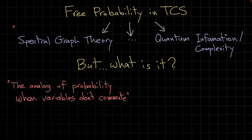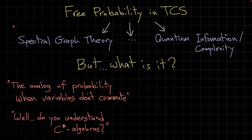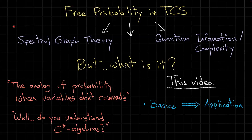A common answer you may find is that free probability is an analog of regular probability, just that the random variables do not commute. This phrase may sound interesting or not, but it is not very informative. If you dive a little deeper and ask a researcher, you will get an answer that is typically very technical and sometimes semi-apologetic. What is available online is very comprehensive, but not necessarily very inviting to all audiences. So the goal of this video is to try to give the bare minimum of the basics of free probability, the basics needed for a specific application.